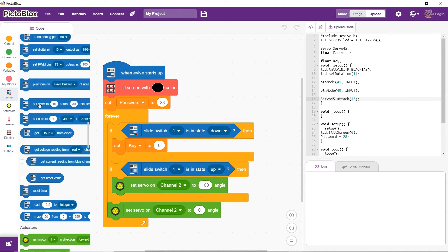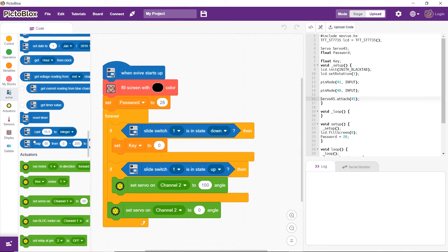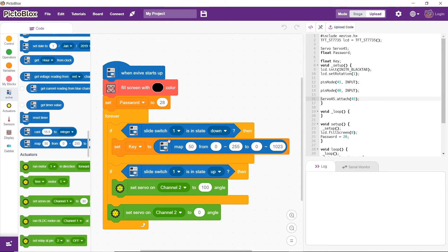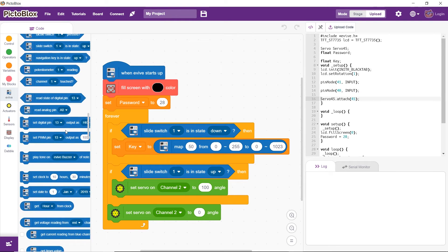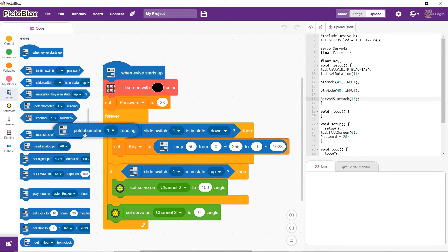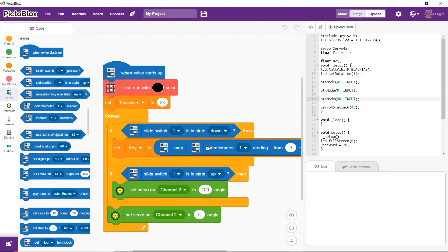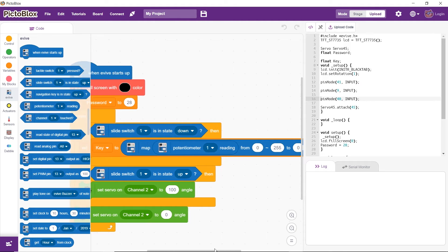The potentiometer gives values between 0 to 1023 and our password can vary between 0 and 100. So, we are going to use a map function to map the potentiometer readings to values between 0 and 100.